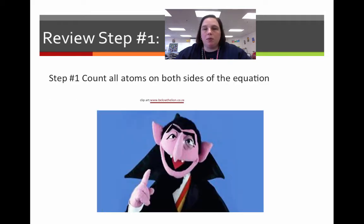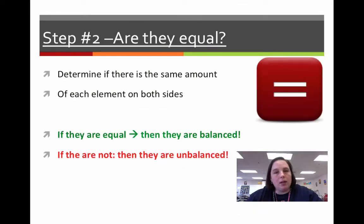So, I'm just doing a quick review from the last one. So, number one, like my buddy the count here, you need to count the atoms on both sides of the equation. Then you have to determine if they are equal. If they are equal, you get to stop. Then you're good to go. You don't have to go forward. If they're not, then we've got to do something about it because we know that doesn't happen in nature.